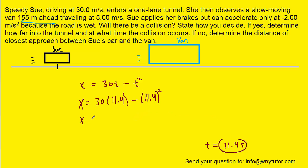And when you calculate that, you should get approximately 212 meters. And so that is the final position, and therefore how far into the tunnel the two automobiles will collide.